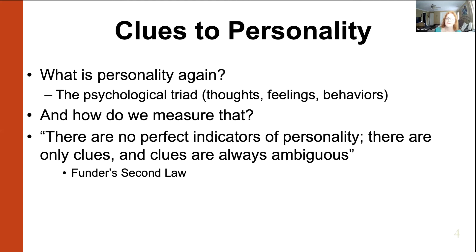How do we measure those things? As I mentioned, there are no perfect ways to measure any personality data at all. All of the BLIS data types have their flaws. Here's Funder's second law — I won't ask you on the mini exam whether it's Funder's second law, but I will probably ask you: are there any perfect sources of personality data? And the answer is no, because every source of data has its flaws.